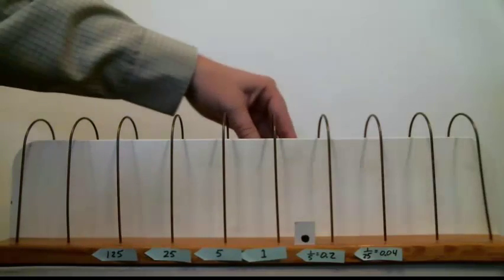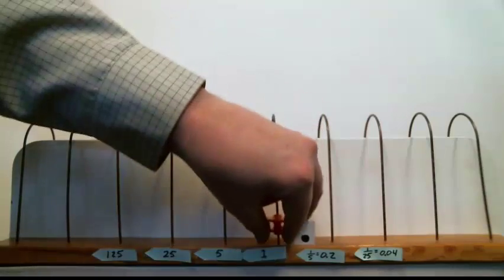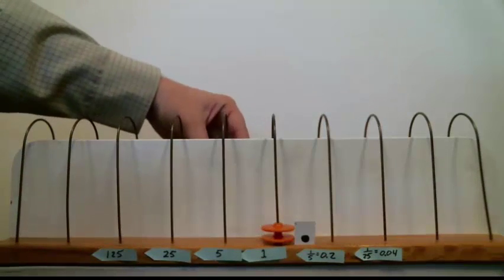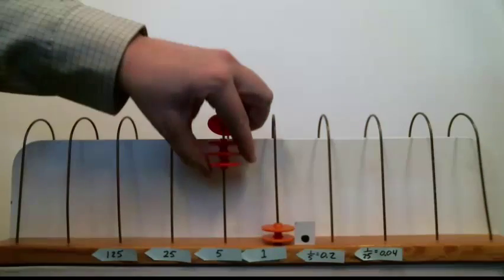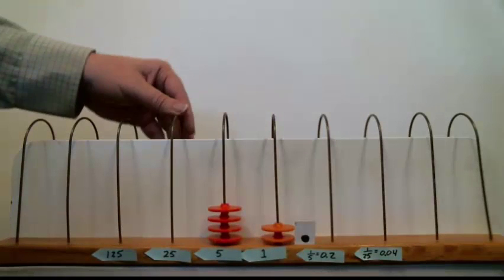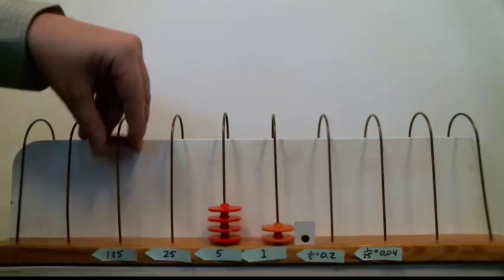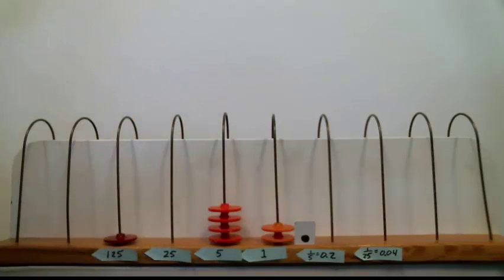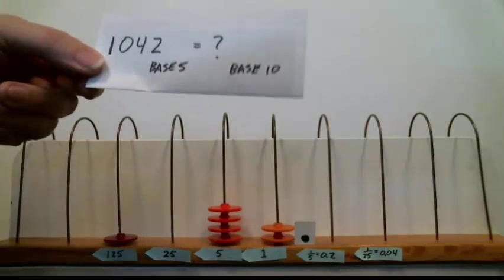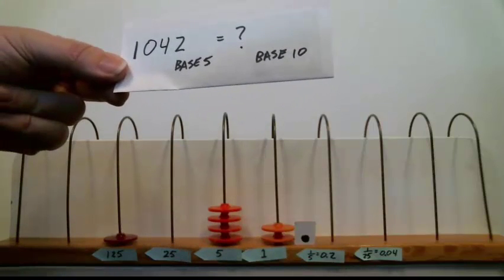Well, I just have to put the right number of beads on the wires. Looks like I need a 2 on the 1's wire. I need a 4. This is all the beads I have for the 5's wire. I need nothing for this wire. And I also need to have 1 on the 125's wire. So here's this number written in base 5 on the base 5 abacus.